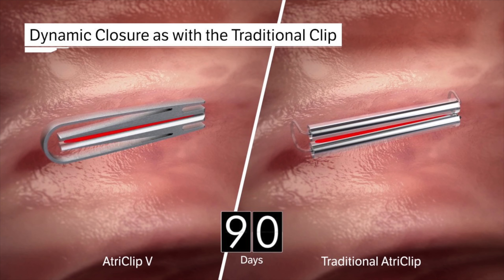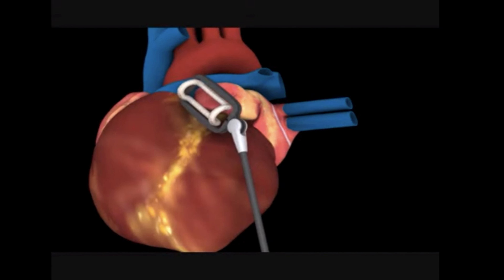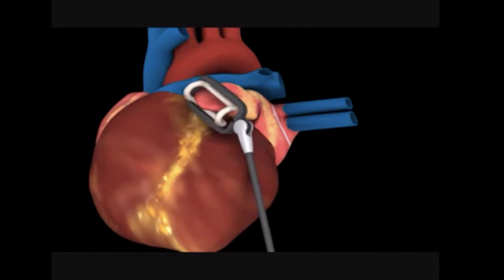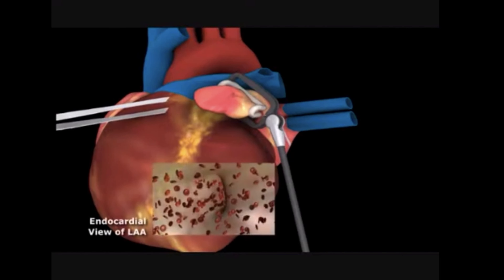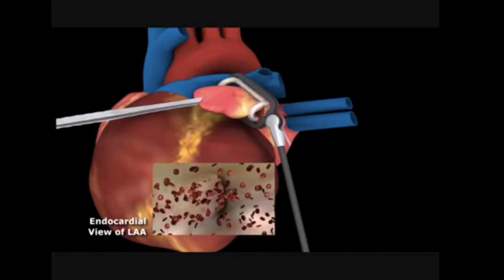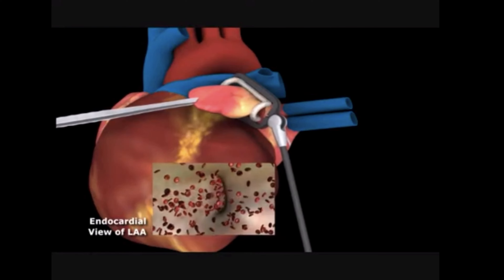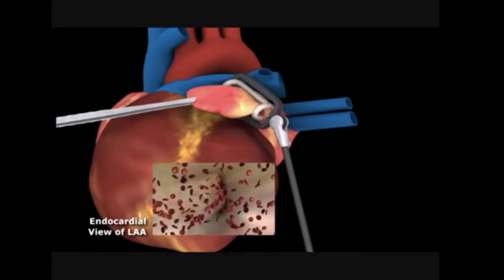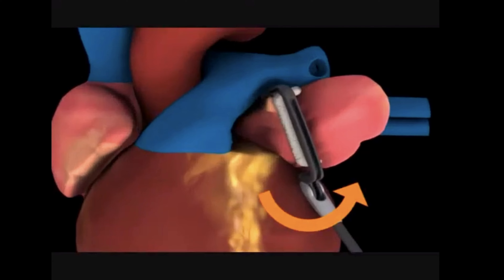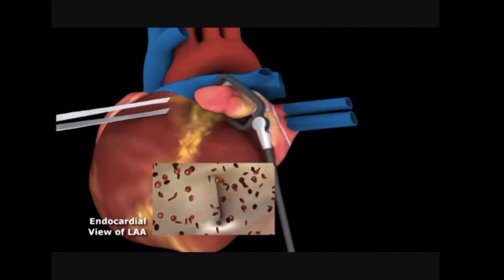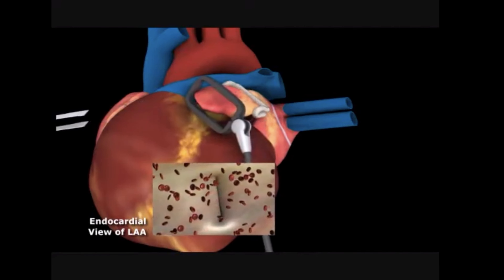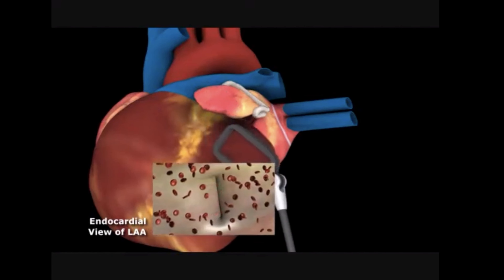Another option is excision or exclusion of the left atrial appendage. During surgical procedures to treat atrial fibrillation, the left atrial appendage is removed and the tissue is closed with a special stapling device, or it can be excluded with a device called the AtriClip. The AtriClip is implanted from outside the heart and stops blood flow between the LAA and the left atrium.